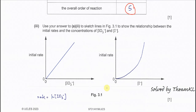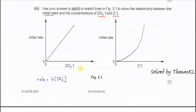Using the answer from the previous part, sketch the line in figure 3.1 showing the relationship between initial rate and concentration of iodate. Since iodate is first order, the rate equals k times the concentration of iodate. When concentration increases, the rate increases proportionally, so you sketch a straight line through the origin — it is directly proportional.